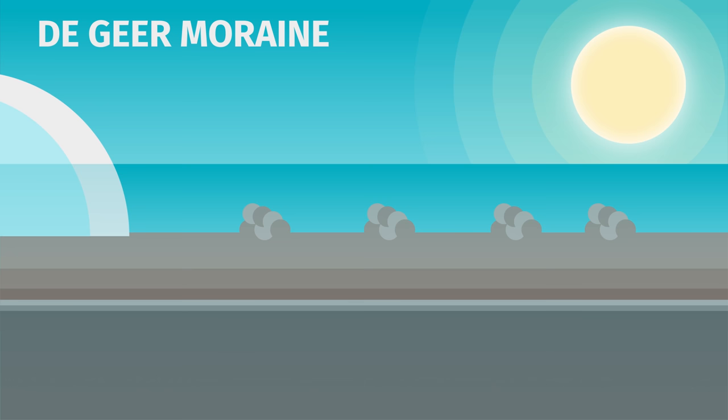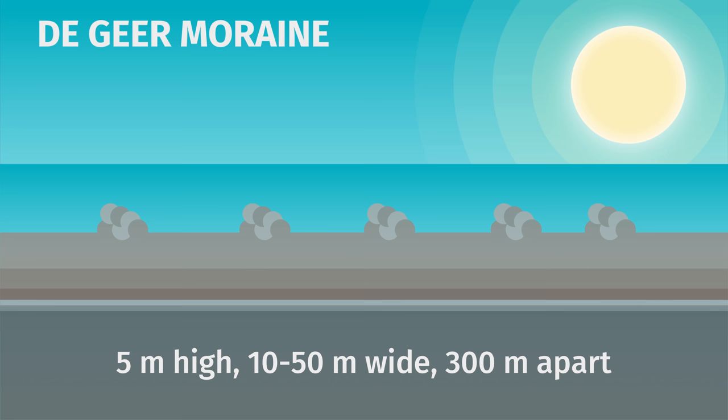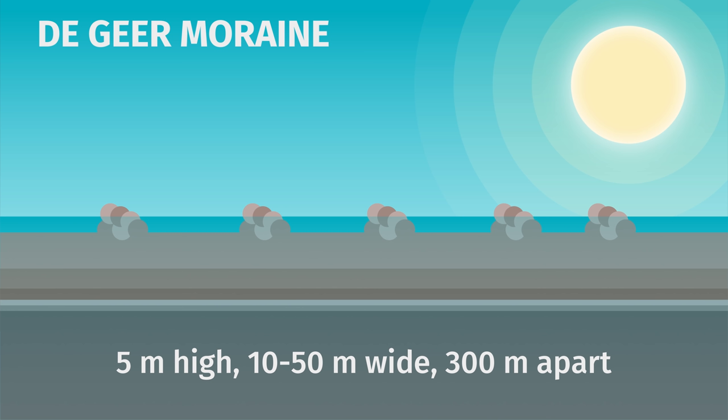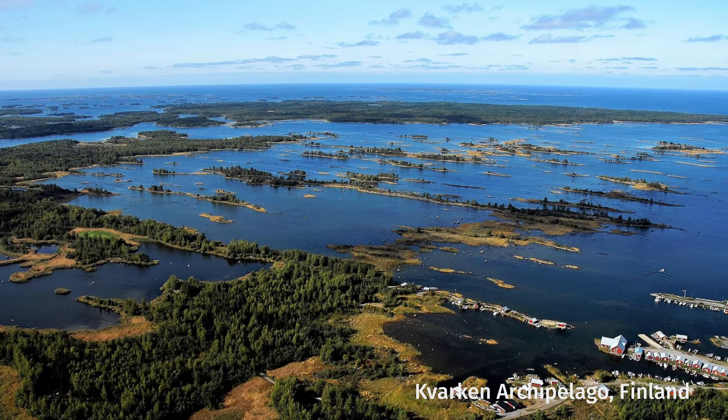They form as a series of parallel ridges perpendicular to the direction of the ice flow, tending to be about 5 meters high, 10 to 50 meters wide, and spaced up to 300 meters apart. If, after the glacier has disappeared, the land rises or the water level drops, the De Geer moraines may become exposed, forming a stunning landscape similar to that of the Kvarken archipelago in Finland.